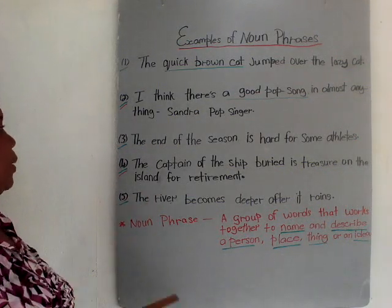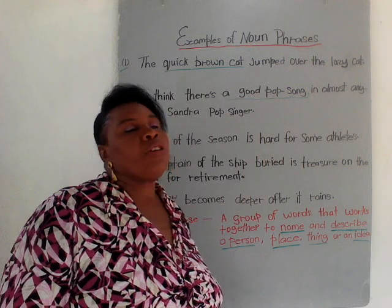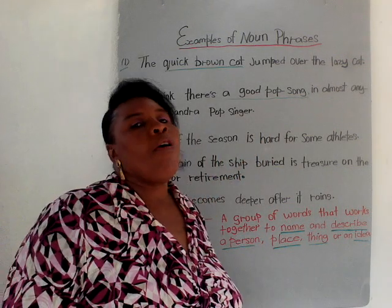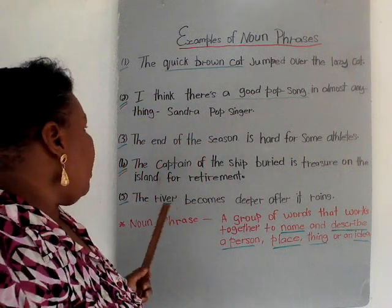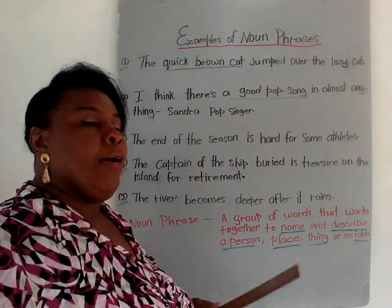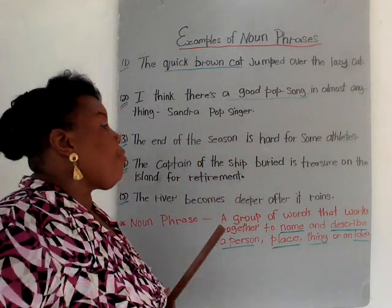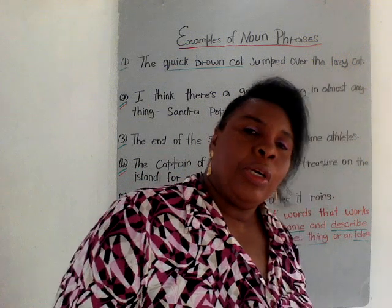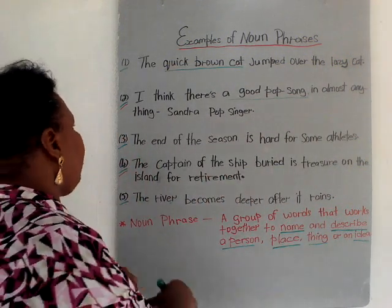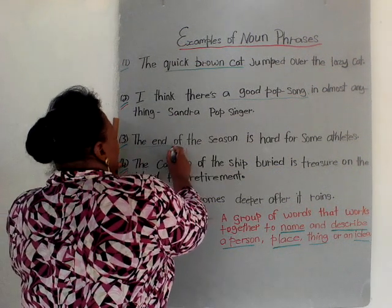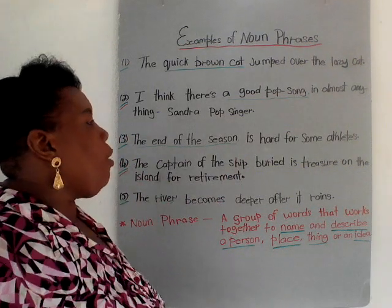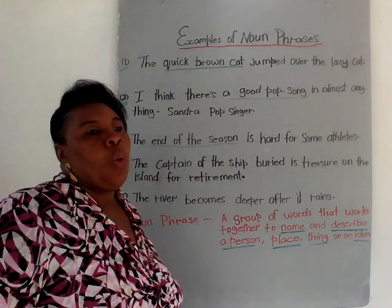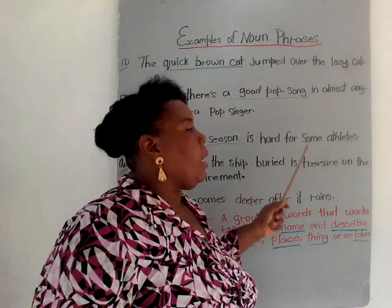Number three: 'The end of the season is hard for some athletes.' Could you identify the noun phrase? The end of the season — if that is what you selected, that's correct. 'The end of the season' is the noun phrase. It is describing when or where in the season the athletes have a hard time.